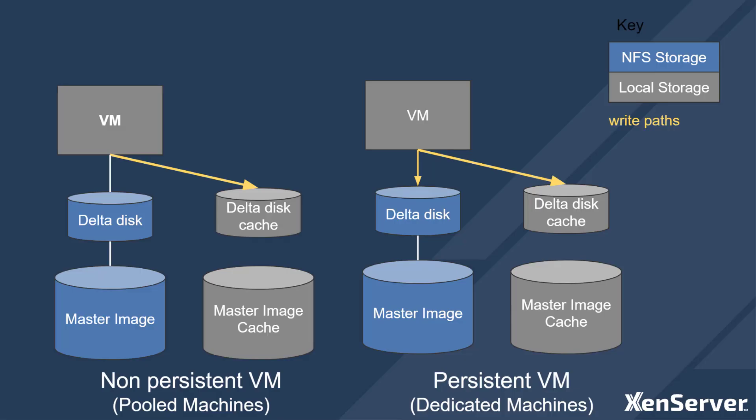When data is written, it is written directly to the cache if the VM cleans itself on boot, as there is no need to persist any data back to the NFS storage. Otherwise, the data is written to the cache and to the delta disk so that if a different host is used for a future boot, the data is not lost and the VM continues to be agile and able to start on other hosts which don't have access to the same local storage for the existing cache.